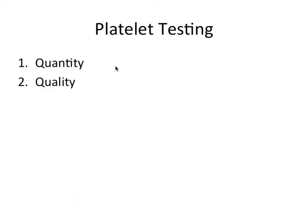We can also test platelets for their quantity — number — or their quality — the way they're functioning. For a platelet count, we test for the number of platelets circulating in the blood; that would be used if someone had thrombocytopenia, which is a low platelet count common in HIV or leukemia patients. For quality, we could test for bleeding time, where you have a cut on your finger and see how long it takes to clot — this tests for platelet function.